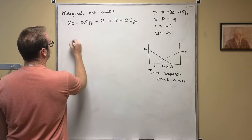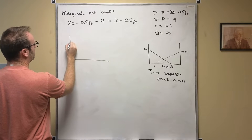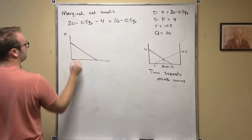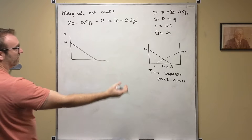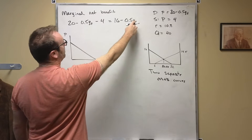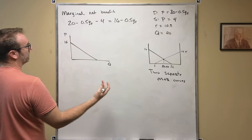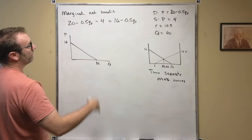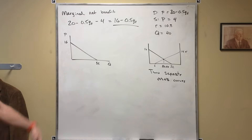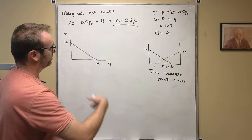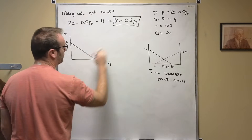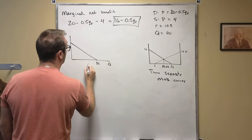So in this case, 20 minus one-half qt minus 4 equals 16 minus 0.5qt. That gives us a curve with a downward slope. The y-intercept — or p-intercept — is going to be 16, which we can verify by plugging in 0 for qt. The x-intercept, or q-intercept, is going to be 32 — we get that by setting the equation equal to 0 and solving for qt: 16 minus one-half times 32 equals 0. This marginal net benefit curve is the exact same for both time periods, t1 and t2.